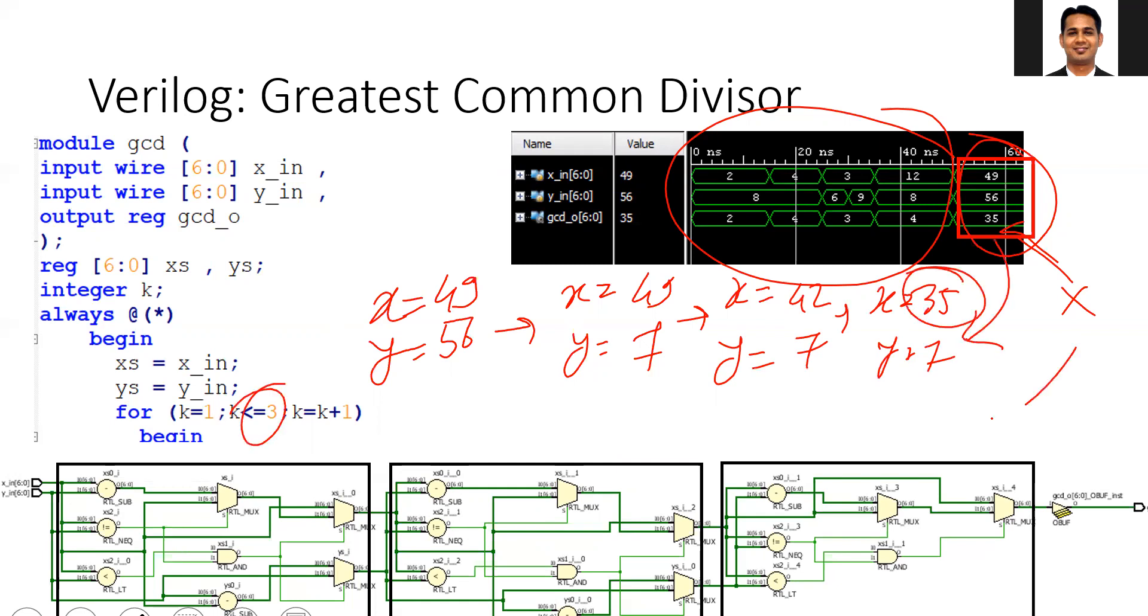Because I have mentioned three iterations of the for loop, I stop here and my output is 35, which is wrong. Since we are defining the number of iterations in the beginning, your code may not work for a certain range of input and output values.